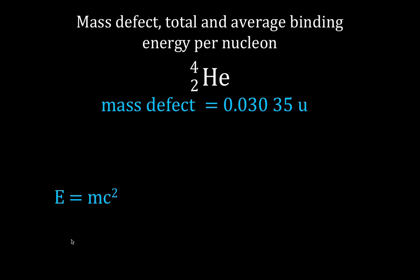So we're going to use Einstein's equation, E equals mc squared. For this equation, the mass has to be given in kilograms, so we're going to convert to kilograms. This gives us the energy in joules, this is the mass in kilograms, and C is the speed of light which we square. So we're going to convert our mass defect in atomic mass units to kilograms.